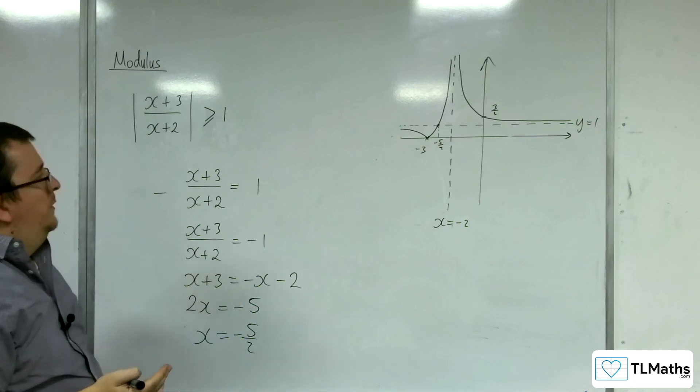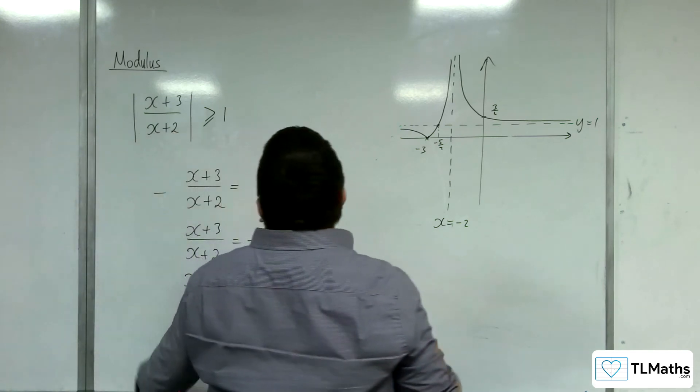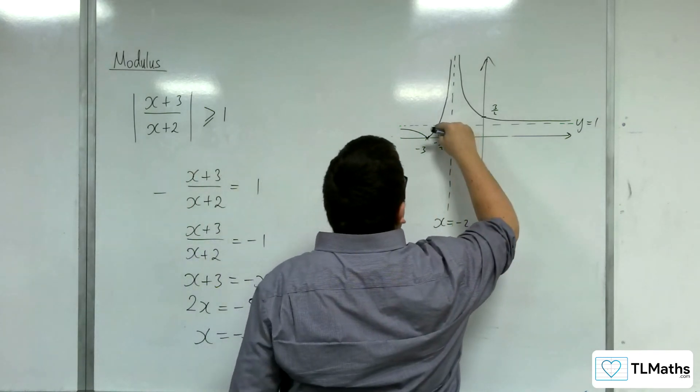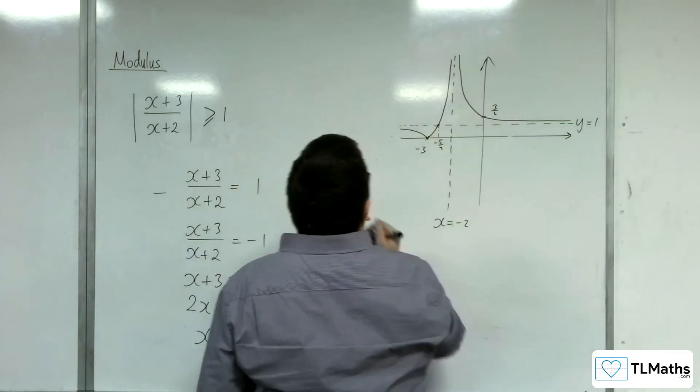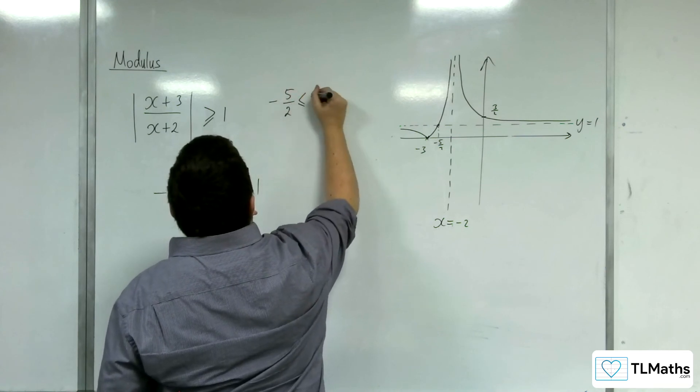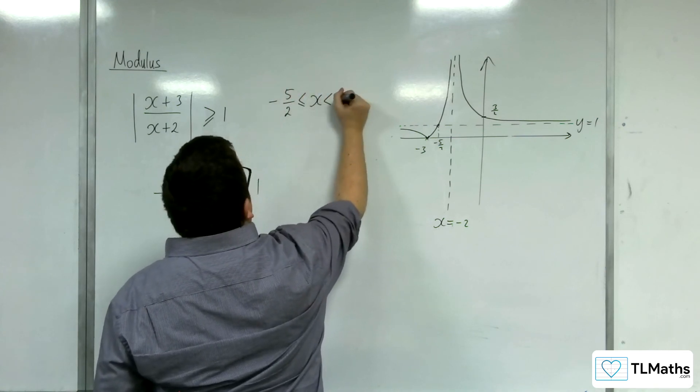So that means in solution to this inequality, we must be looking at the graph between minus 5 halves and minus 2. So minus 5 halves is less than or equal to x is less than minus 2.